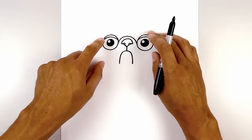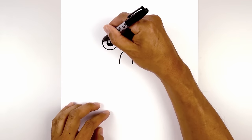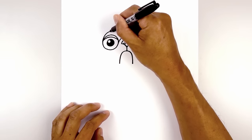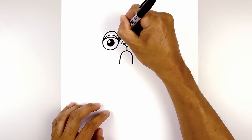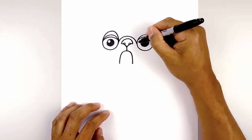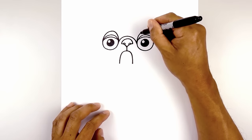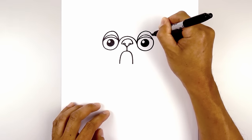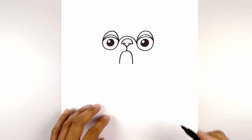Now we're going to move back up and draw on the brow. Starting from the left side of the eye, curve up higher at the top and then pull that down on the inside of the eye. Do the same thing on the right, curving up towards the top and then down on the side.